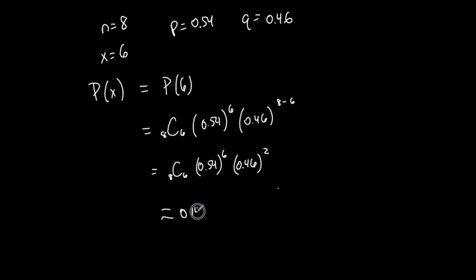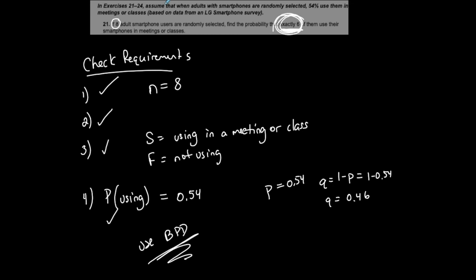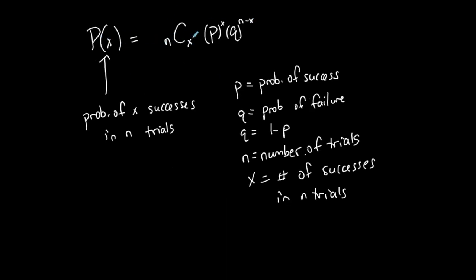So there's approximately a 14.7% chance that exactly six out of the eight are using their smartphones in a meeting or class. Given that 54% — more than half — use their phones this way, this result makes sense. The formula is not hard; it's plug-and-chug as long as you can identify each piece.